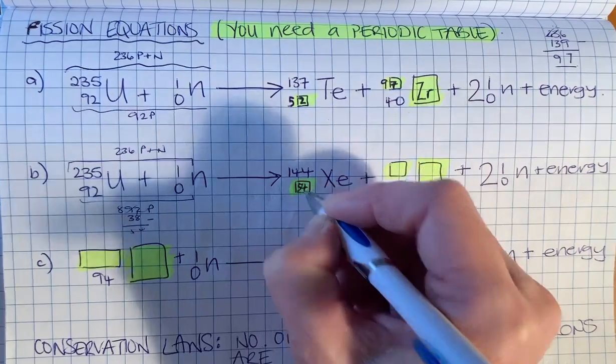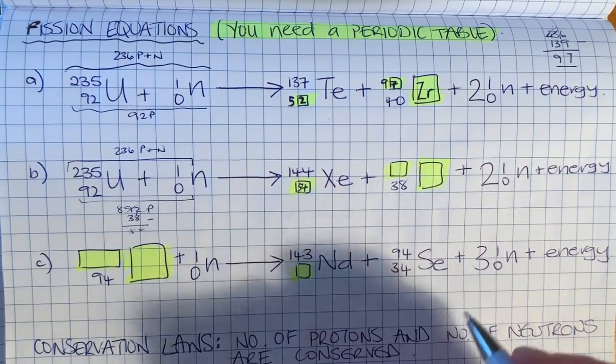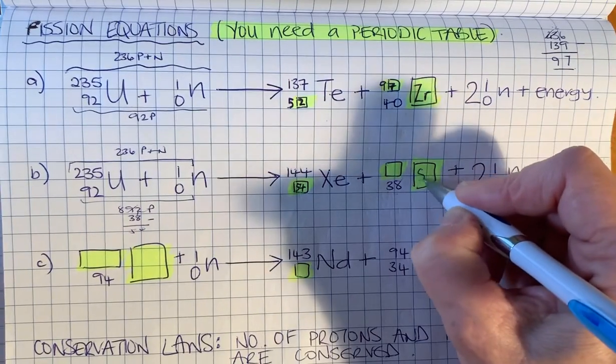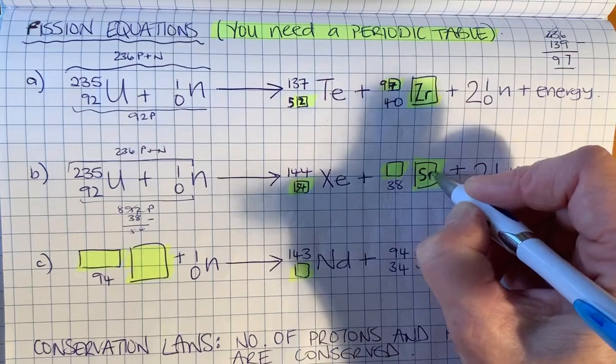Element number 54 is xenon, and element number 38 is strontium with the symbol Sr. You'll be able to find those in your periodic table.